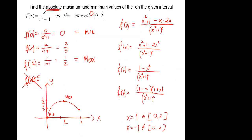Important question: absolute maximum and absolute minimum on a given interval. Find the function value at the endpoints — at zero and at two — and also find the critical points. We get one and negative one, but negative one is outside the interval, so only use one. Substitute all these into the function; the highest value is the absolute maximum and the lowest is the absolute minimum.